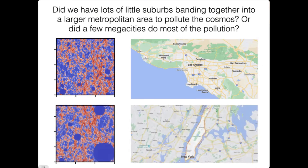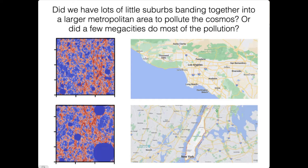And this stands in contrast to a situation like New York, where you've got a very strong downtown and a giant city doing almost all of the pollution in the area. And if our galaxies worked like that, you'd see the picture where a few galaxies dominate the pollution, creating these big spherical bubbles. So by studying these maps, we can understand things about the nature of first-generation galaxies.